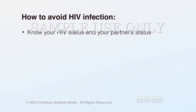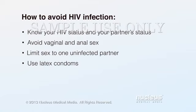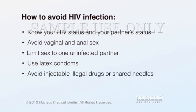The most effective way to prevent HIV infection is to avoid vaginal and anal sex. When engaging in sexual activity, you will be less likely to contract HIV if you only have sex with one uninfected partner or use latex condoms for protection. Avoid using injectable illegal drugs or sharing drug needles because the needles may have the virus on them.